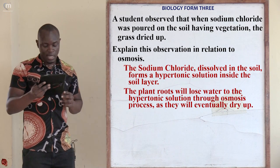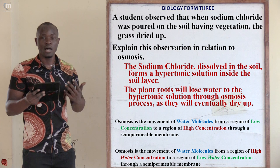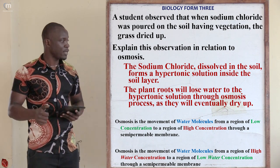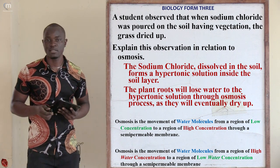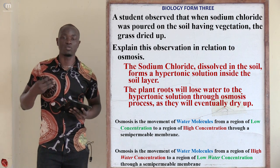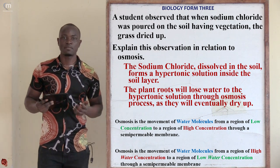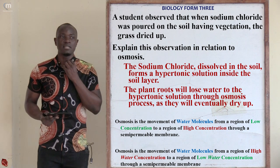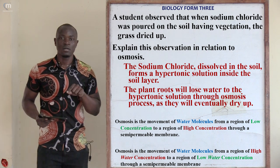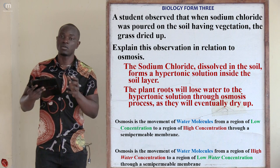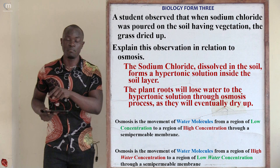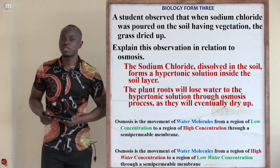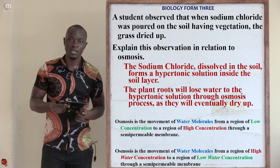Question number eight: a student poured sodium chloride on soil with vegetation and the grass immediately dried up. Explain this observation in relation to osmosis. Since the water poured had sodium chloride, the soil became highly concentrated (hypertonic) while inside the roots was lowly concentrated (hypotonic). Through osmosis, water moved out of the roots and into the soil.